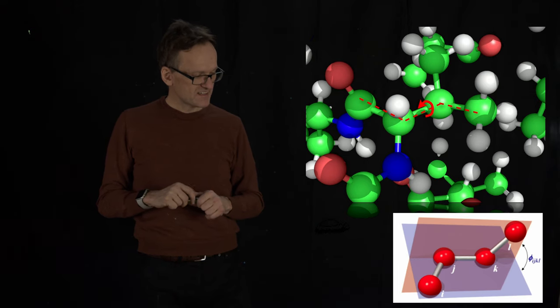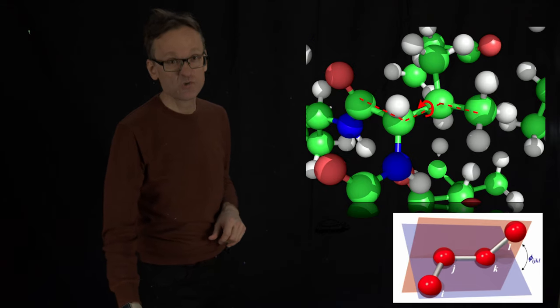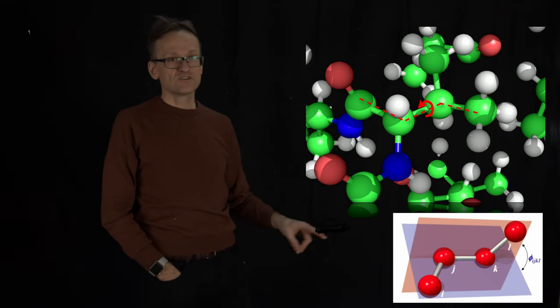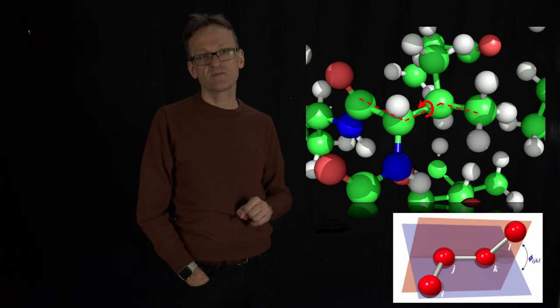What gets a bit complicated here now is that we're going to need to find a way to describe this. And this gets complicated in two ways. First, if you look at the red and blue planes here, there are two ways to describe this.